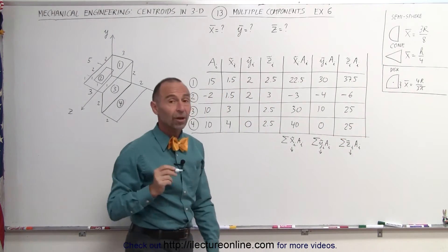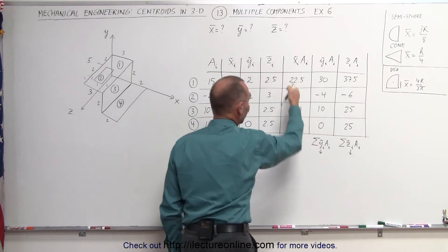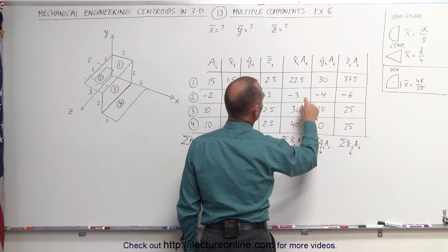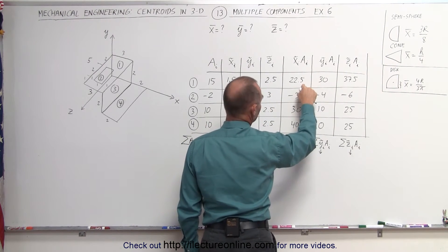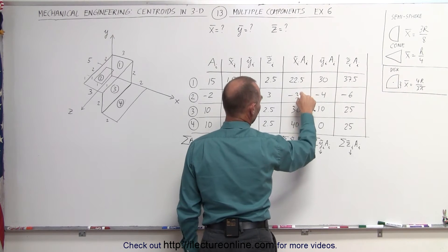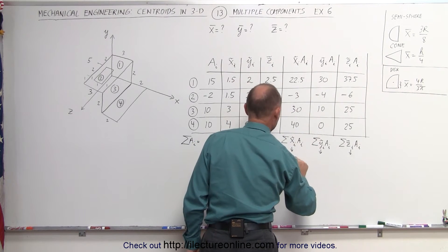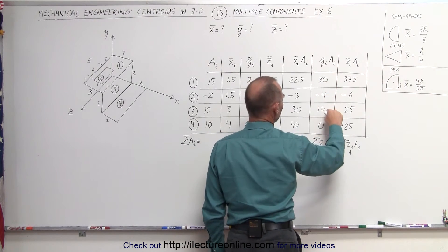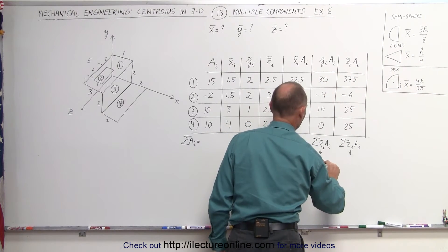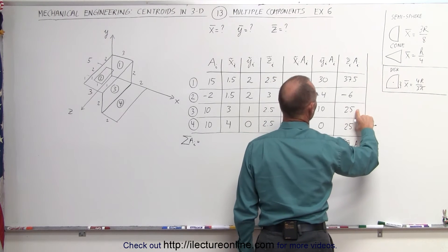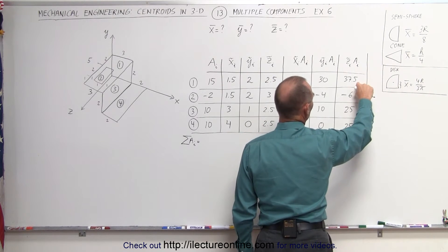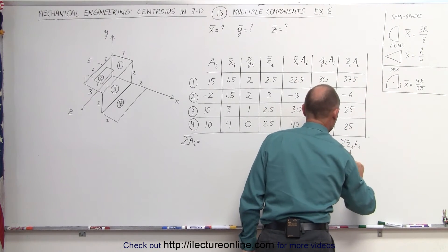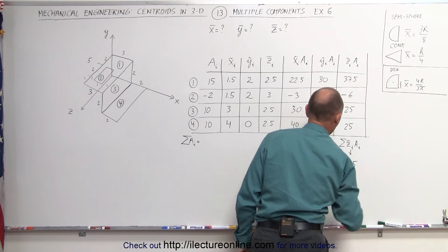Now we're ready to sum these up. Summing the x-products: 22.5 minus 3 plus 30 plus 40 gives us 89.5. Summing the y-products: 30 minus 4 plus 10 plus 0 gives us 36. And summing the z-products: 37.5 minus 6 plus 25 plus 25 gives us 81.5.